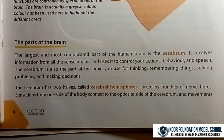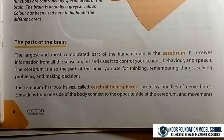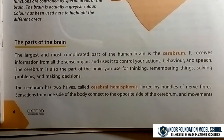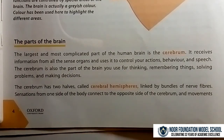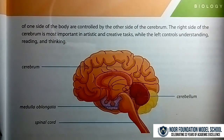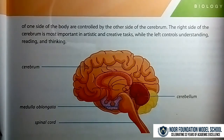The cerebrum has two halves called cerebral hemispheres, linked by bundles of fibers. Sensations from one side of the body connect to the opposite side of the cerebrum, and movements of one side of the body are controlled by the other side. The right side of the cerebrum is most important in artistic and creative tasks, while the left controls understanding, reading, and thinking.